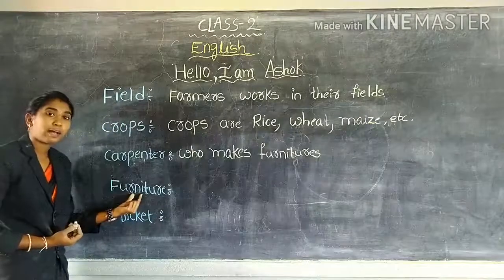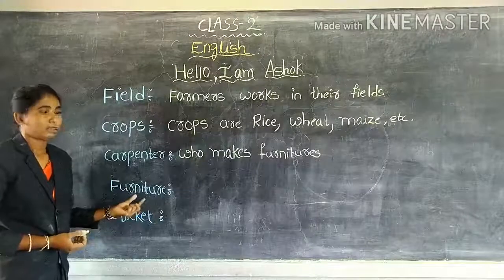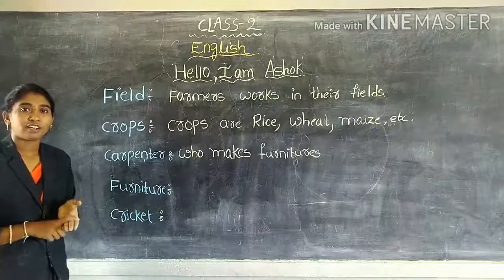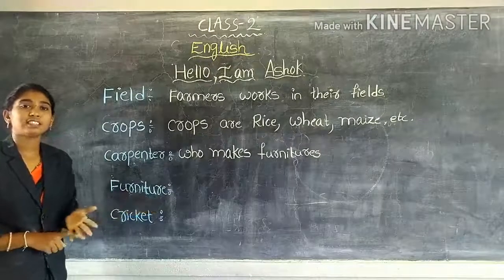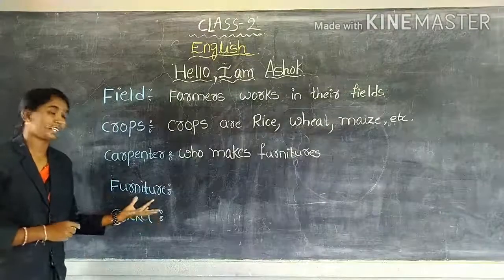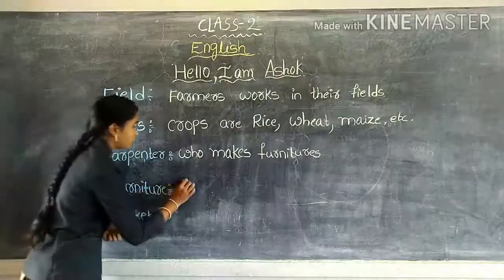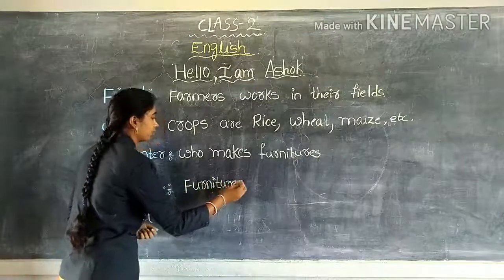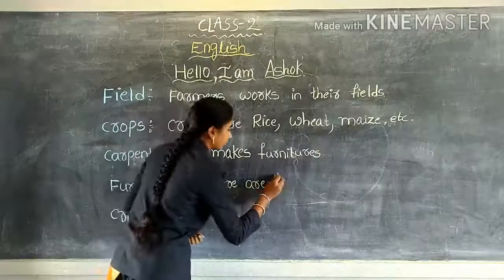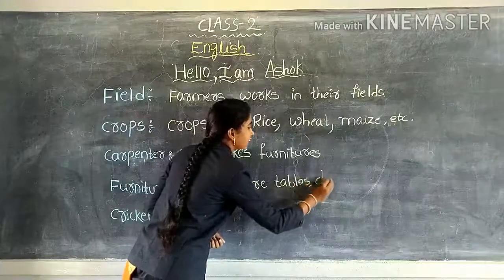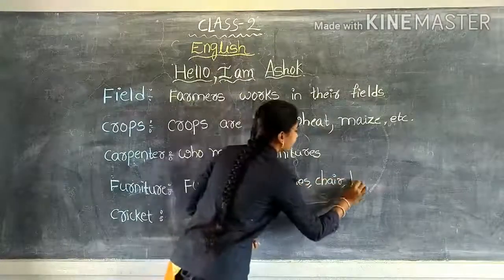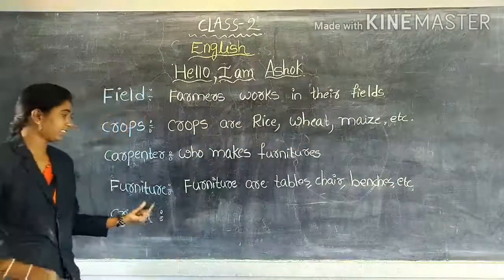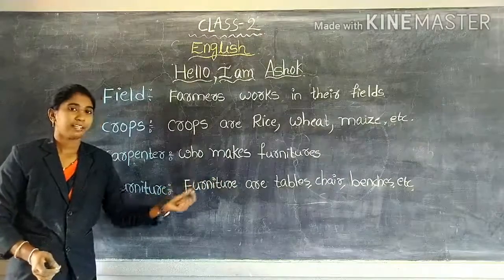Next, our vocabulary of furniture. Furniture means chairs, tables, benches. These are called furniture. What is there in your home? These are the furniture. So vocabulary of furniture is: furniture includes tables, chairs, benches etc.